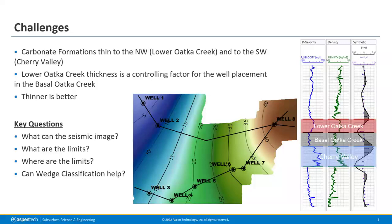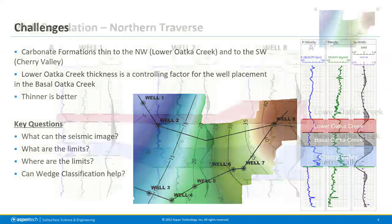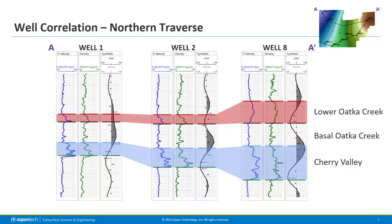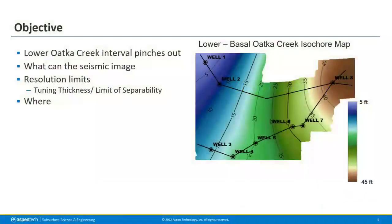Here is a well correlation across the northern traverse from wells one, two, and eight. We can see how the lower Oafta Creek member thins greatly to the northwest, but the Cherry Valley formation thins only a small amount, and the Basal Oafta Creek shale interval is relatively constant. The primary objective is mapping out the lower Oafta Creek interval as it pinches out — understanding what the seismic can see, the resolution limits, the tuning thickness, and the limit of separability.